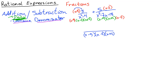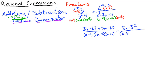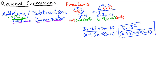The numerators become 3(x-9) = 3x-27 and 5(x-2) = 5x-10. Adding them: 8x-37. So the result is (8x-37)/[(x-9)(x-2)(x+2)]. The top, 8x-37, does not factor, so we cannot cancel anything with the denominator. That's the final answer.